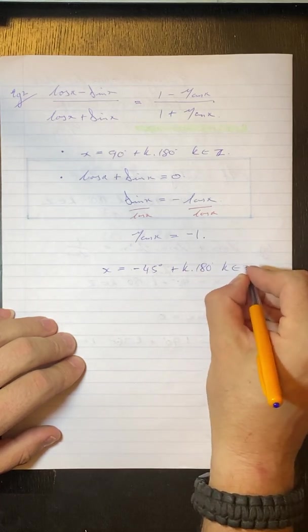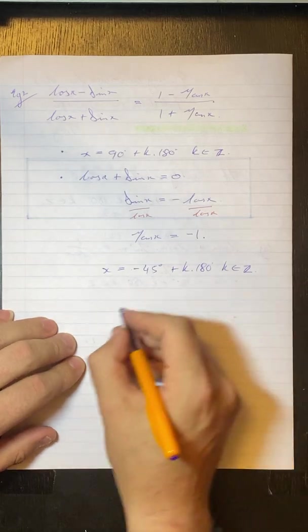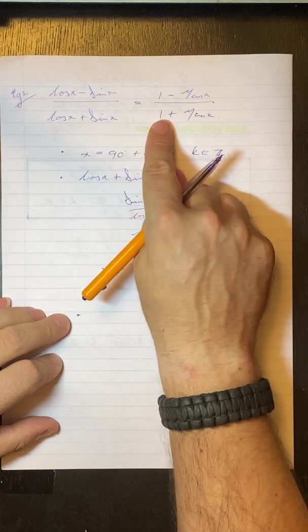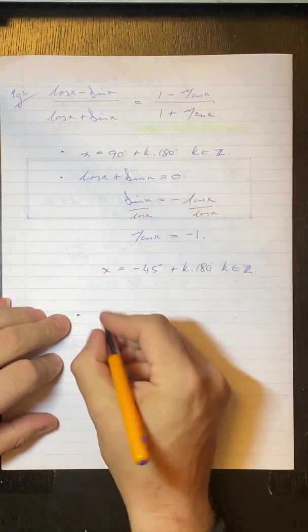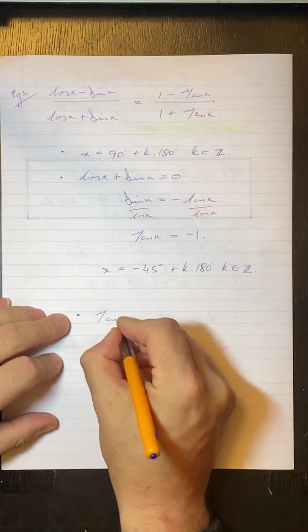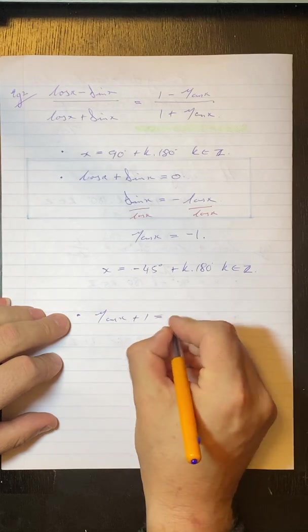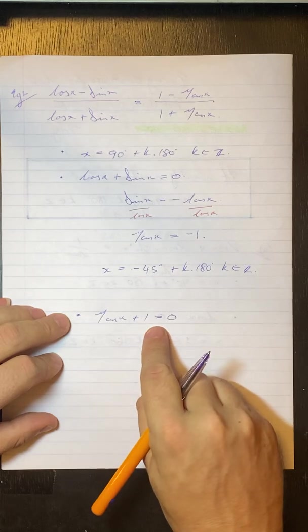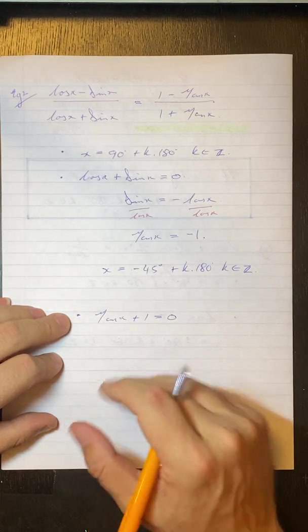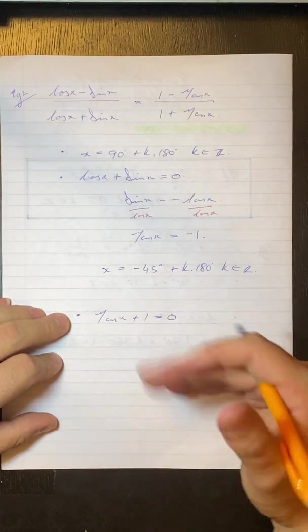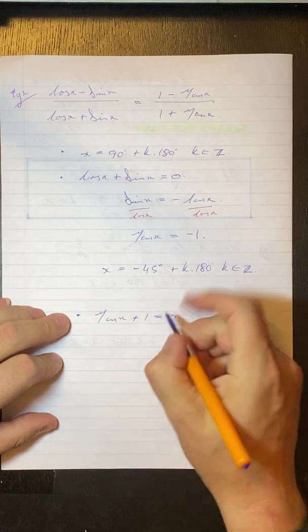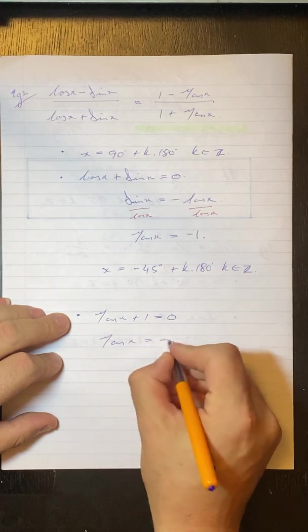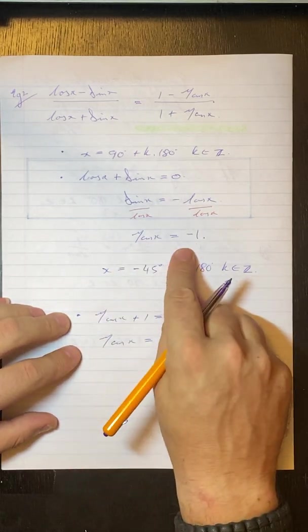All right, now I'm going to look at my next one which is this thing here: tan x plus 1 cannot be equal to zero. Now I know I keep saying it can't be equal to zero and here I'm setting it equal to zero, it's because I want to solve for where it would be undefined. So don't put a little line through there.